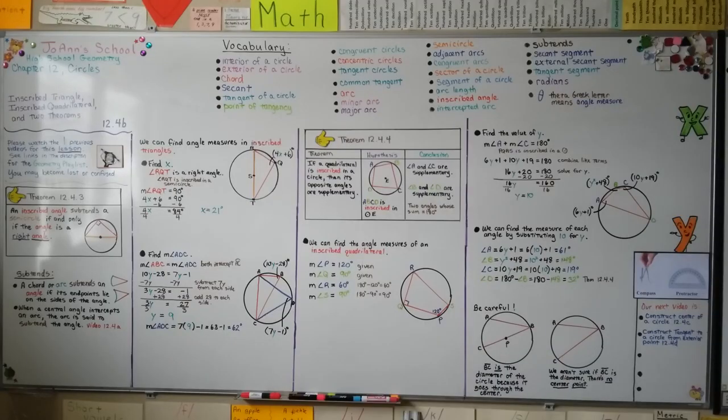The two important things you should take away from this lesson is from our first theorem: an inscribed angle subtends a semicircle if and only if the angle is a right angle. And our theorem here, if a quadrilateral is inscribed in a circle, then its opposite angles are supplementary. They have to total 180 degrees. That'll really help you. I hope you're doing well, and I'll see you next time.